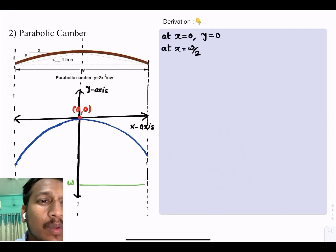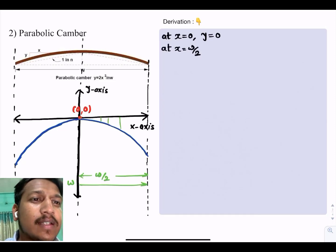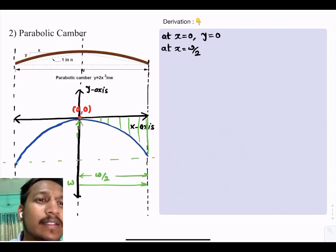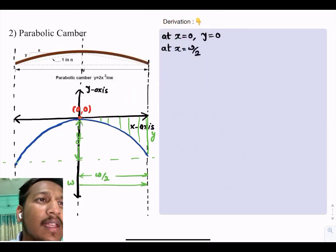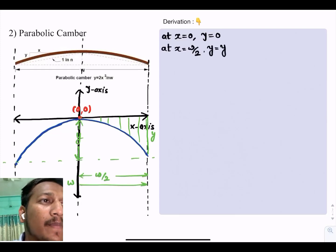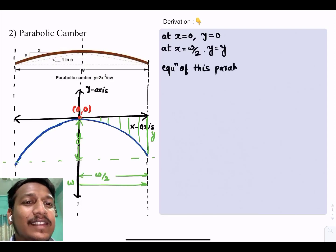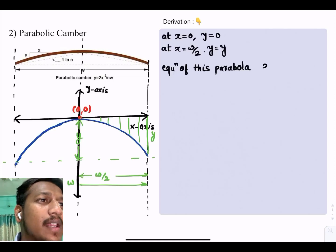The width of the pavement is w. At x equals 0, y equals 0. At x equals w by 2, that is half of the width of the pavement, y becomes equals to y, the central height.